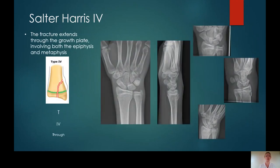Salter-Harris type 4 fracture extends all the way through from the metaphysis, through the physis, involving the epiphysis and into the articular surface. This is a scaphoid series. You can appreciate fractures on these images, and looking at it all together you realise the fracture is within the distal radial metaphysis. Looking closely at the DP and DP oblique projections, you can see a subtle fracture line extending through that epiphysis and into the articular surface. This patient also has an avulsion fracture of the ulnar styloid.